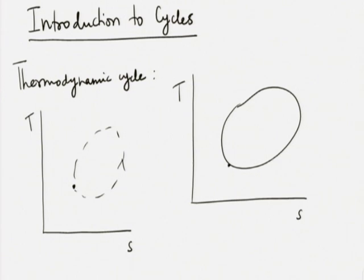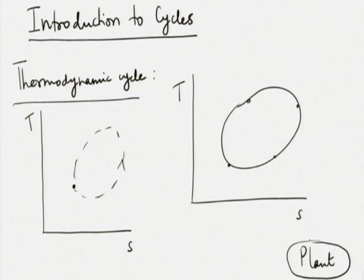For our purpose, most of our cycles will be depicted using quasi-static processes, so we will have any number of points of equilibrium in between. Actual cycles may not be like this — for a non-isentropic turbine, we need to know only the inlet and exit state; what happens in between we do not really care. On one side we have the thermodynamic cycle, on the other side we have an actual plant made up of pieces of equipment, and in between we have the technical cycle.